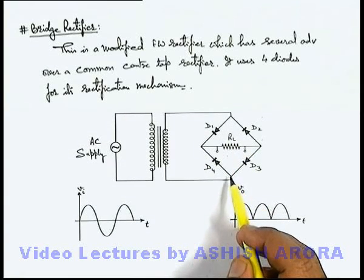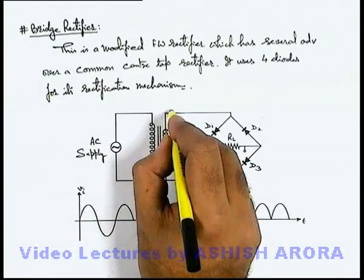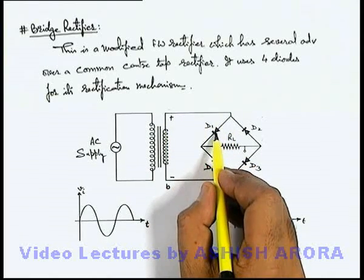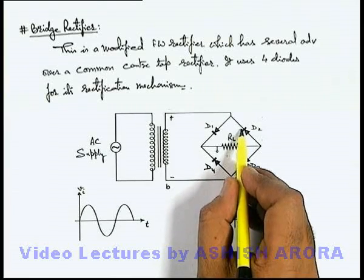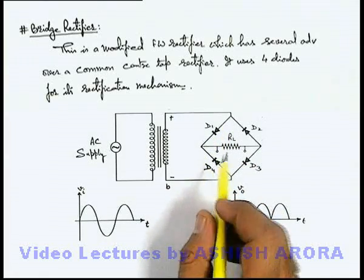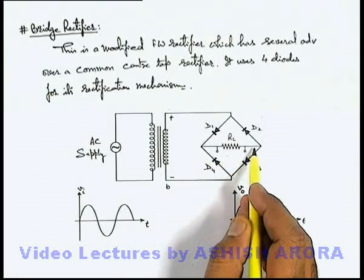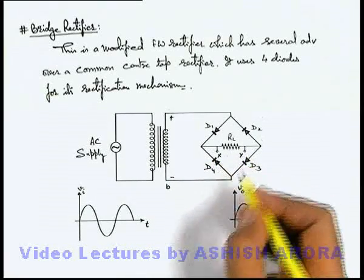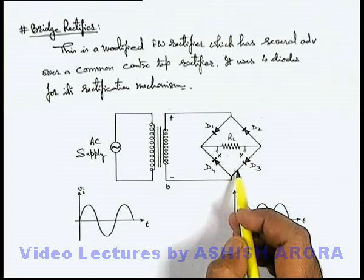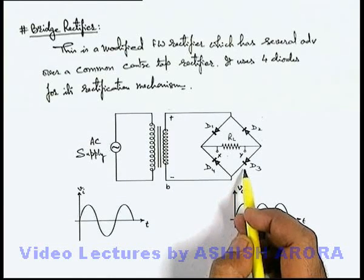In this situation, if we talk about the positive half cycle of the input supply: say the terminals A and B of the secondary coil are positive and negative respectively. If terminal A is positive, then D1 will be forward biased and D2 will be reverse biased, because the N side of D2 is connected to the positive terminal. So current will pass through D1. Here D4 will be reverse biased because current cannot pass from N side to P side. Current will flow through the load resistance from terminal X to terminal Y. On the other side, current will flow through diode D3 and D3 is forward biased.